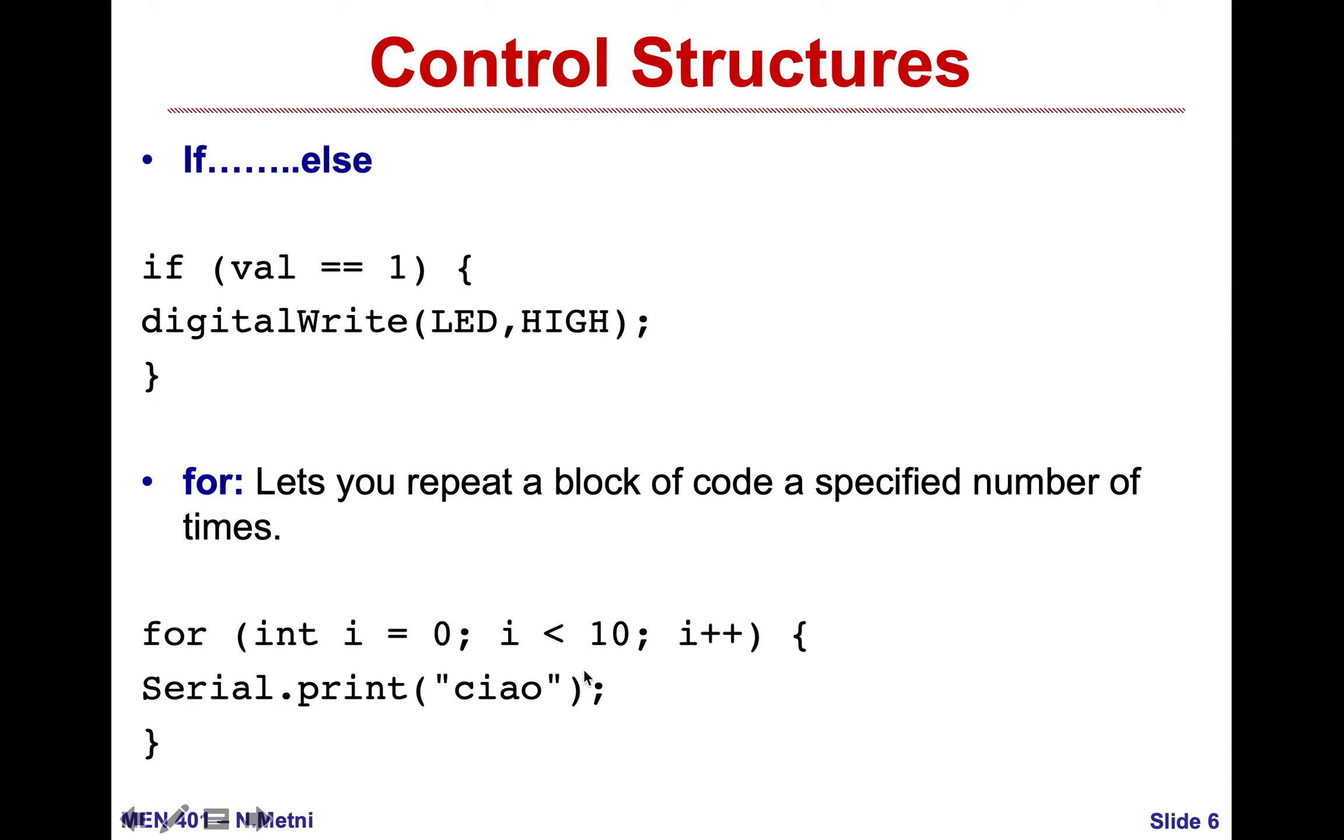I will put i equal to zero, go inside, print, show on the screen, then increase i by one. When i is equal to nine I will enter, then when i is equal to ten this condition is not true anymore so I will not enter this for and will continue my code. This way will give me ten times ciao printed on the screen.